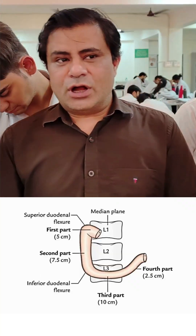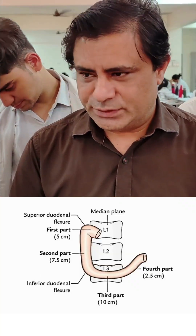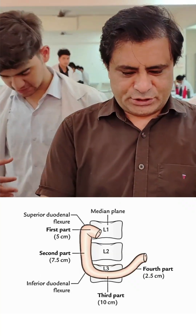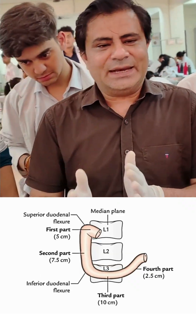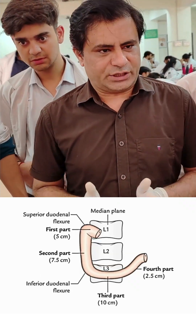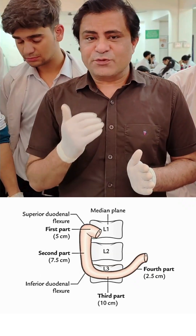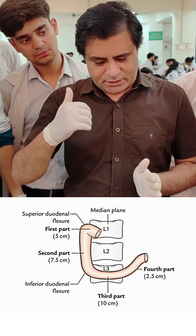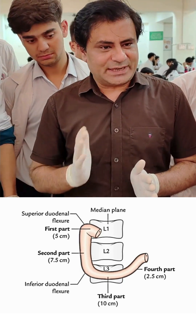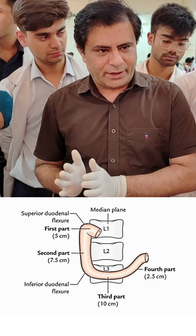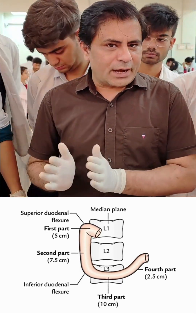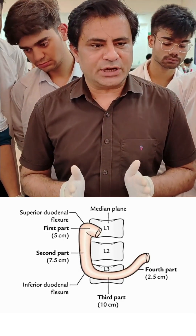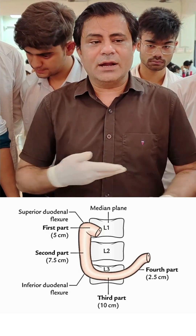Now let's talk about its location. On the surface, the Duodenum is nearly a midline structure. It has 4 parts and a looping shape, so the second part sits more to the right side, but overall it is nearly a midline structure.